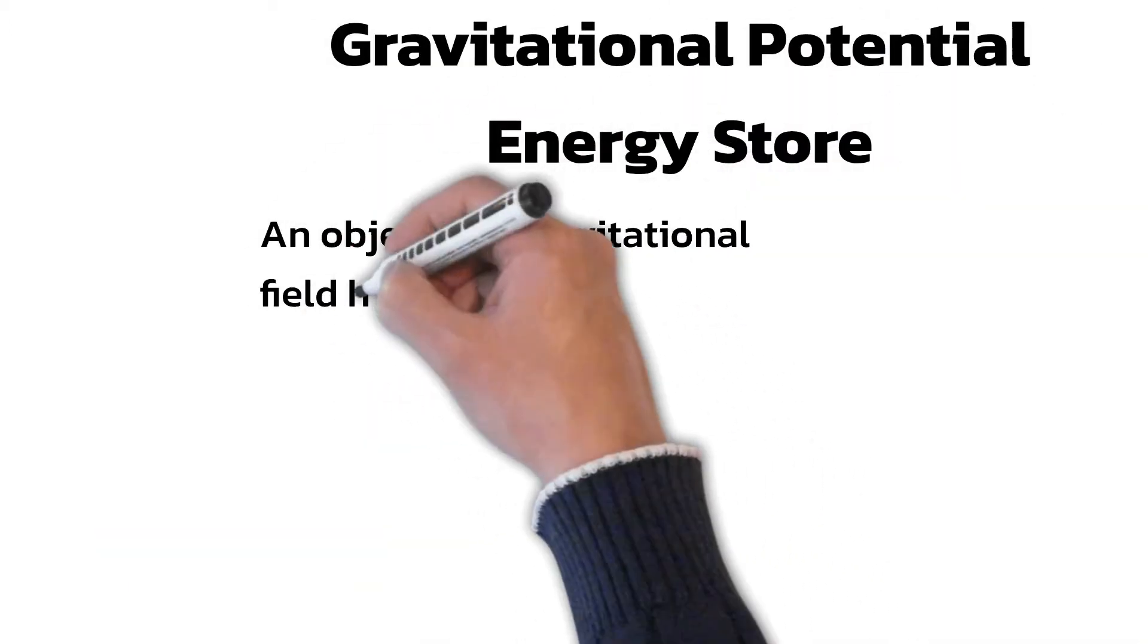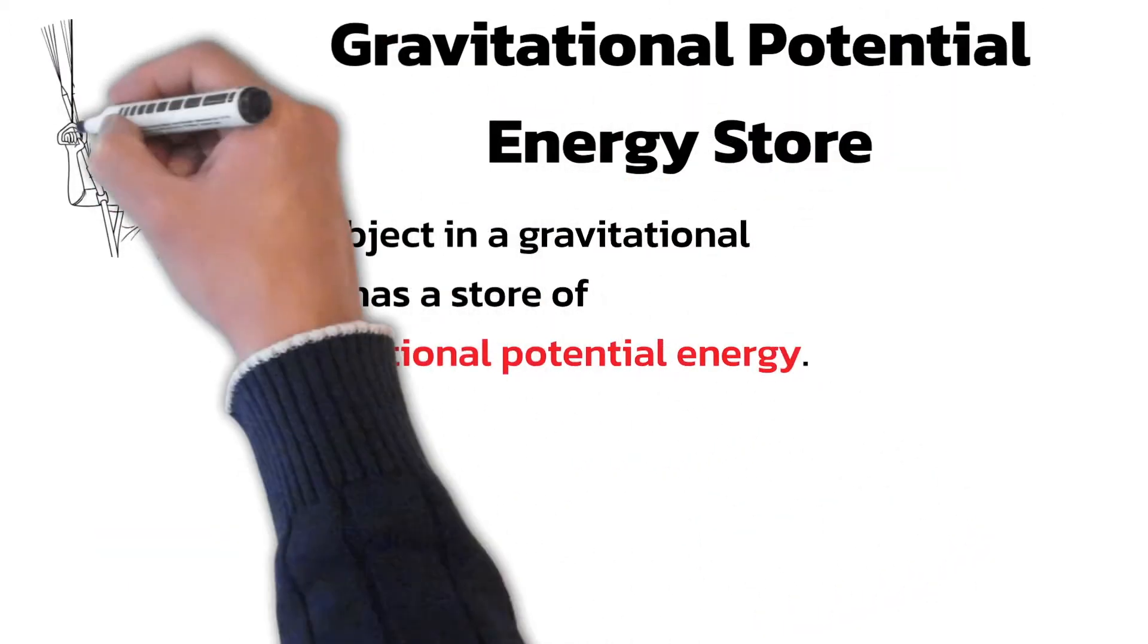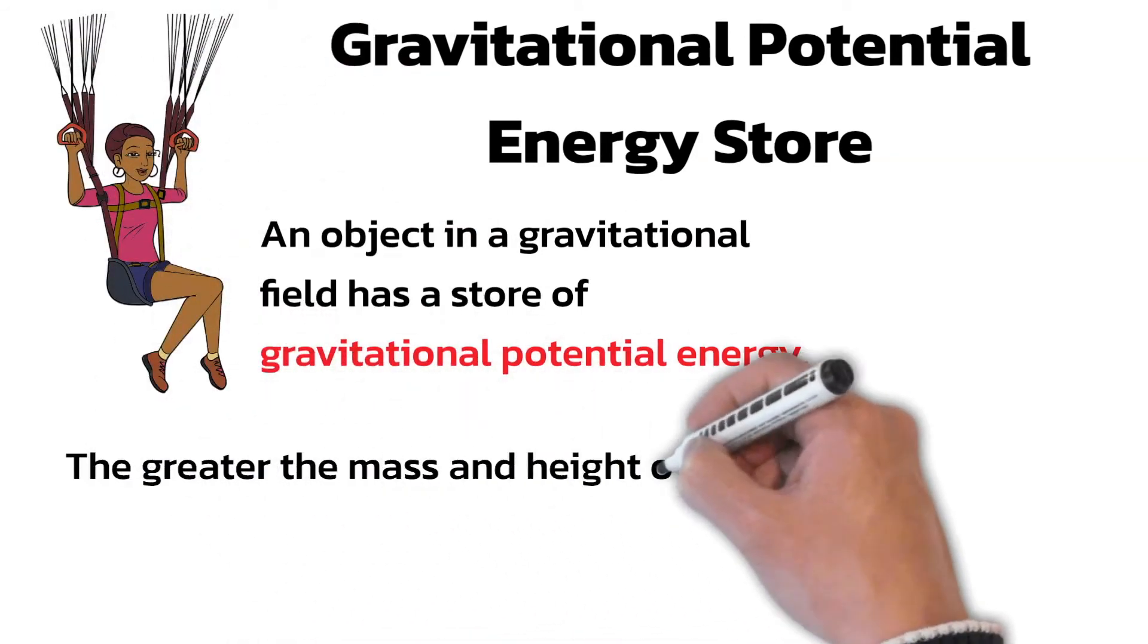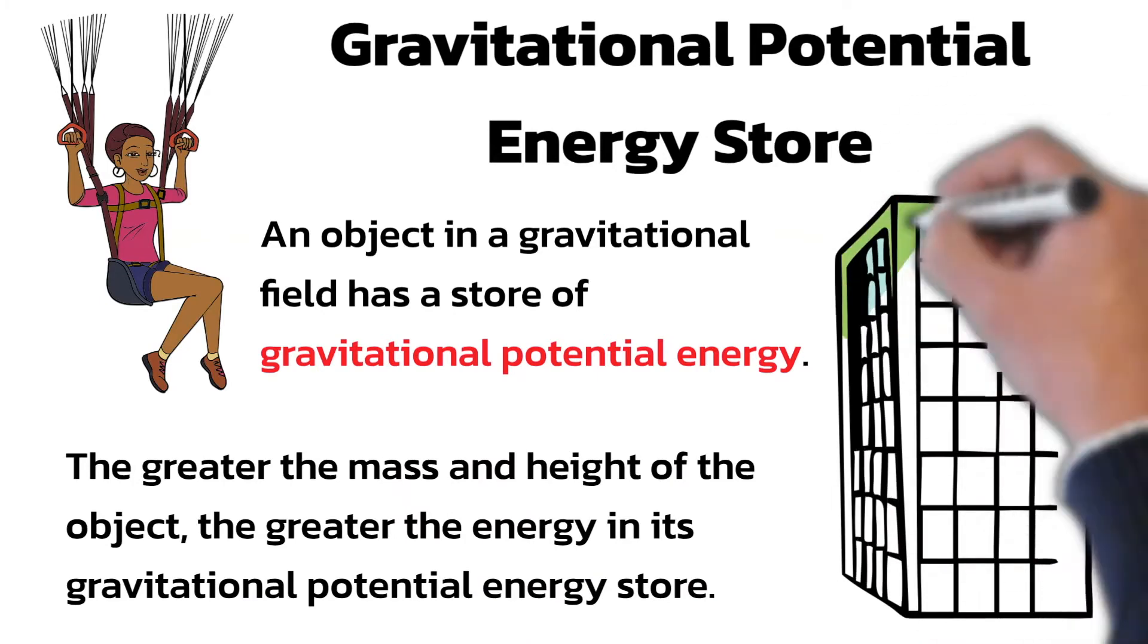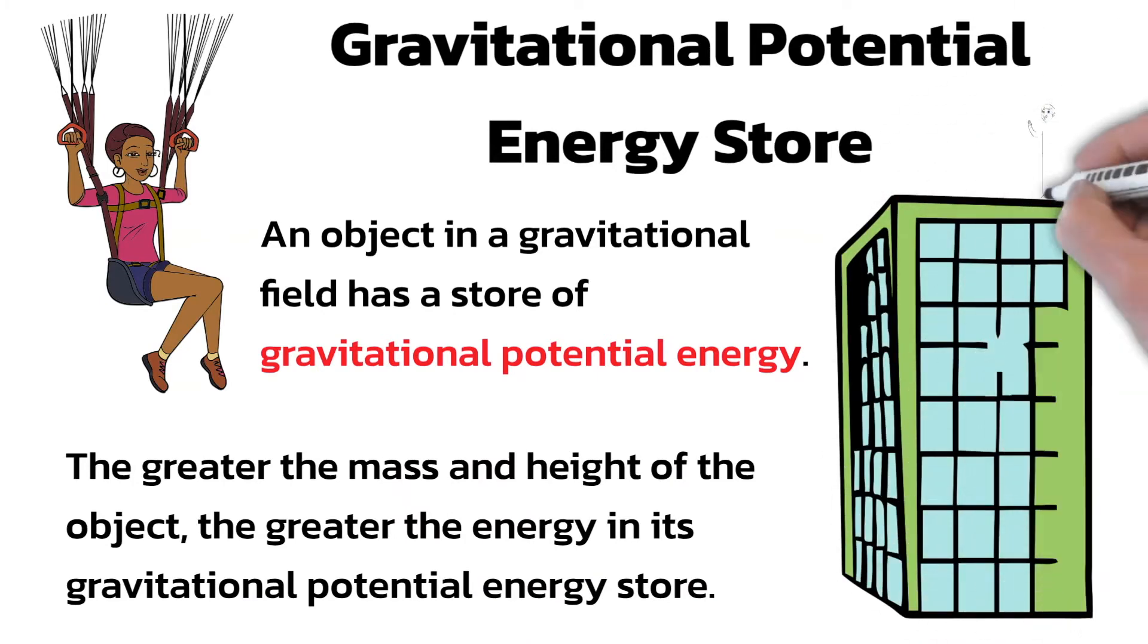Gravitational potential energy store. An object in a gravitational field, like this parachutist, has a store of gravitational potential energy. The greater the mass and height of the object, the greater the energy in its gravitational potential energy store.